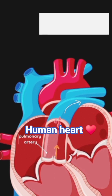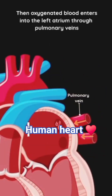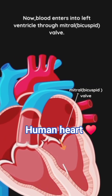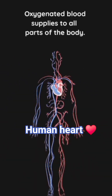In the lungs, deoxygenated blood mixes with oxygen and is converted into oxygenated blood. The oxygenated blood then enters the left atrium through the pulmonary veins, and passes into the left ventricle through the mitral bicuspid valve. Finally, oxygenated blood returns to the body through the aorta, supplying oxygen to all parts of the body.